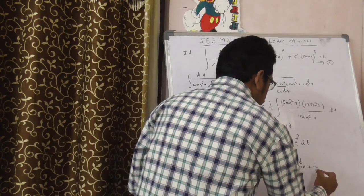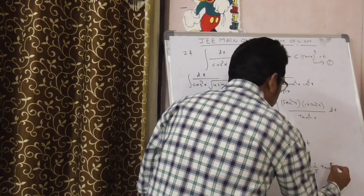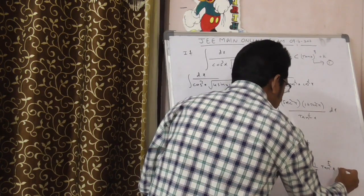Now, your next step is nothing but tan x power 1 by 2 plus this 1 by 2, 1 by 2 gets cancelled. Denominator is 5. Therefore, 1 by 5 of tan power 5 by 2 x plus k.